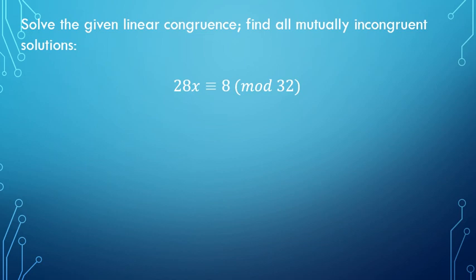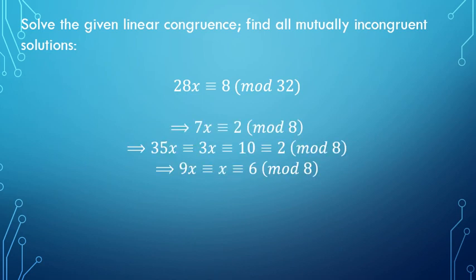All right, let's see if you were right. First, we need the GCD of 28 and 32, which is 4. And 4 obviously does divide 8. So we have integer solutions, and we know that we have four mutually incongruent solutions that we need to find here. I'm going to divide each of my numbers by the GCD to get my simplified congruence. So we're solving 7x is congruent to 2 mod 8.